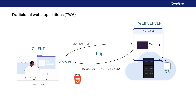The browser interprets the HTML code and draws the screen, showing images, buttons, menus, controls, and all the information of the requested page, with the appearance and functionality programmed in the requested page or in the web application.